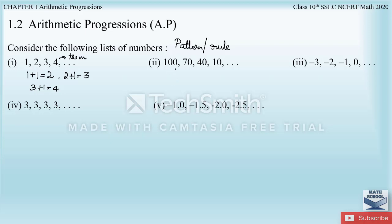In the next list, by subtracting 30 from each preceding term, you obtain the succeeding term. The first term is 100; subtract 30 to get 70. Then 70 minus 30 is 40, and 40 minus 30 gives 10. So 30 is the fixed number which is subtracted here.